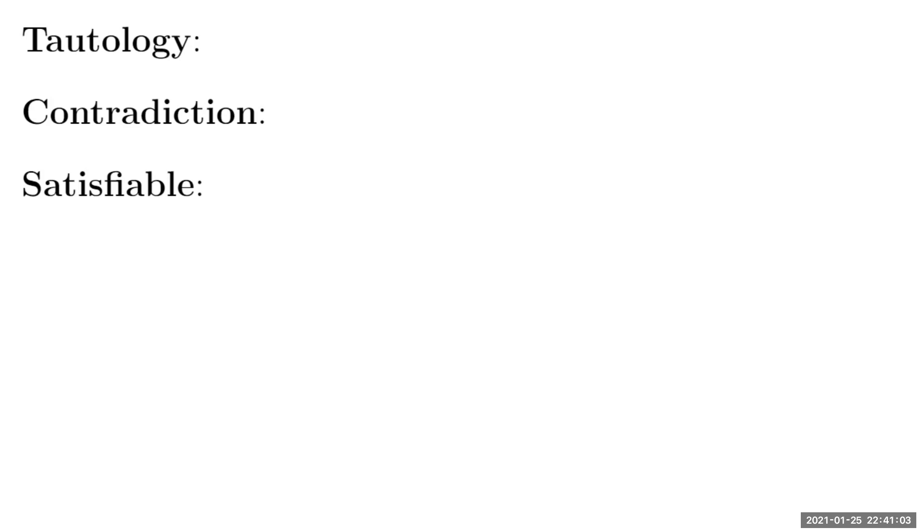Today we'll be discussing tautologies, contradictions, and satisfiable — three states of a compound proposition. A compound proposition can be a tautology, a contradiction, or it can be satisfiable. Satisfiable is often used interchangeably with the word consistent, so when asked whether a compound proposition is satisfiable, it's the same as asking whether it's consistent.